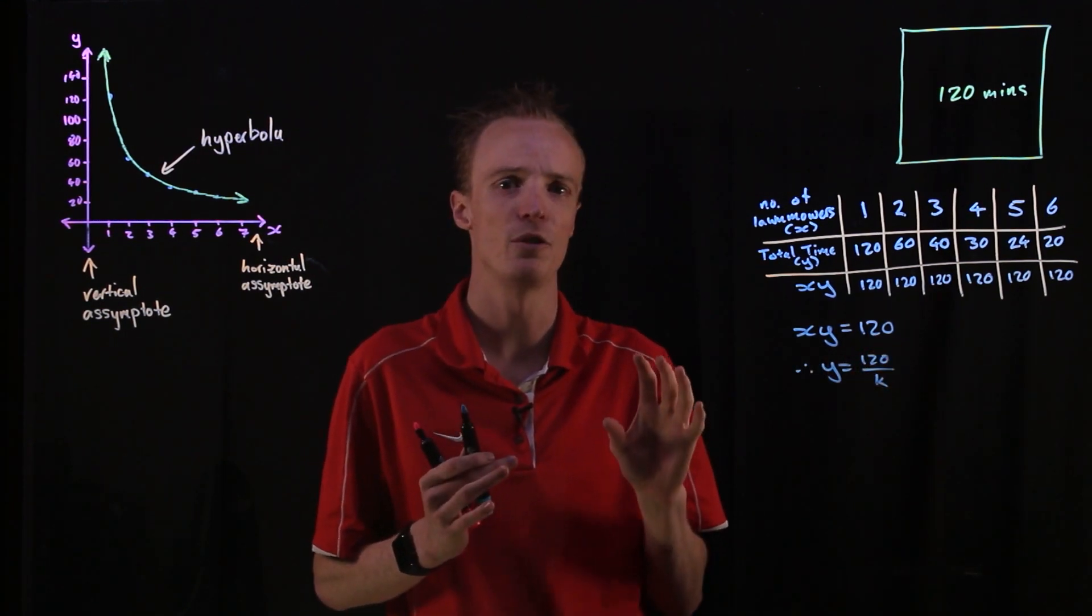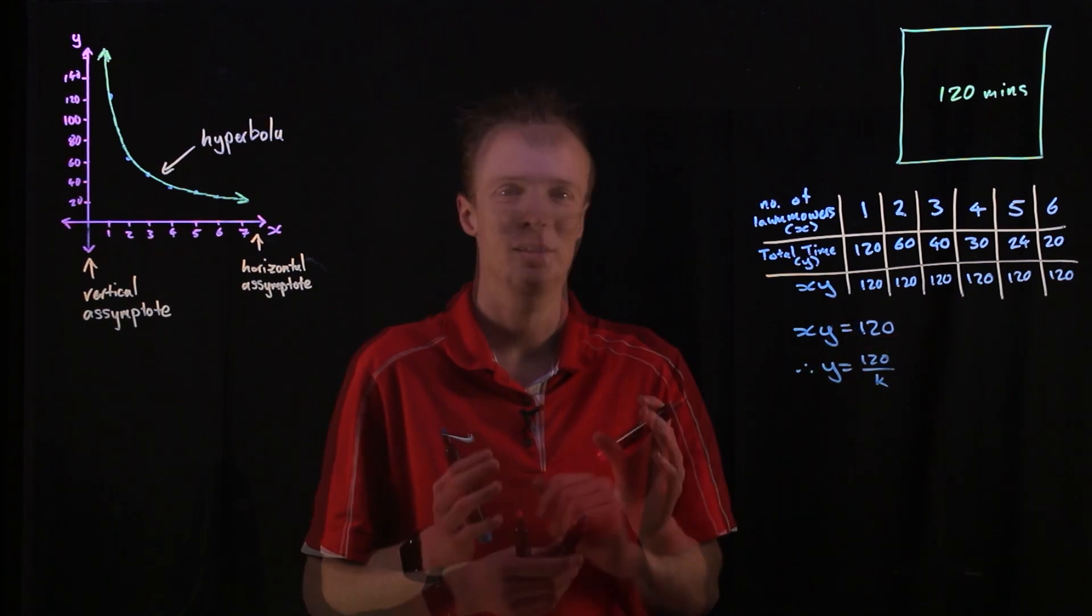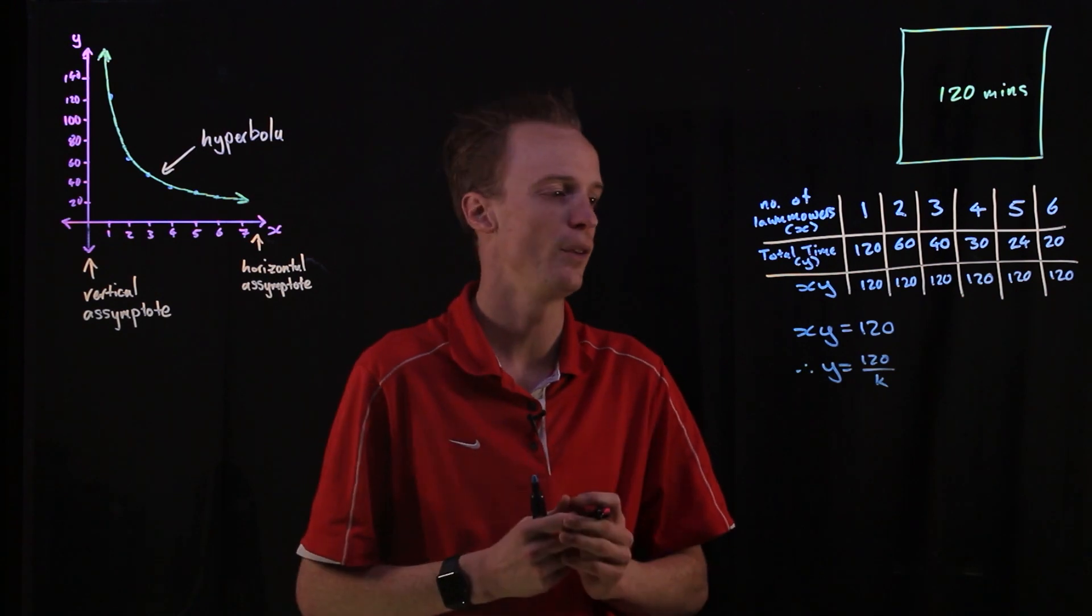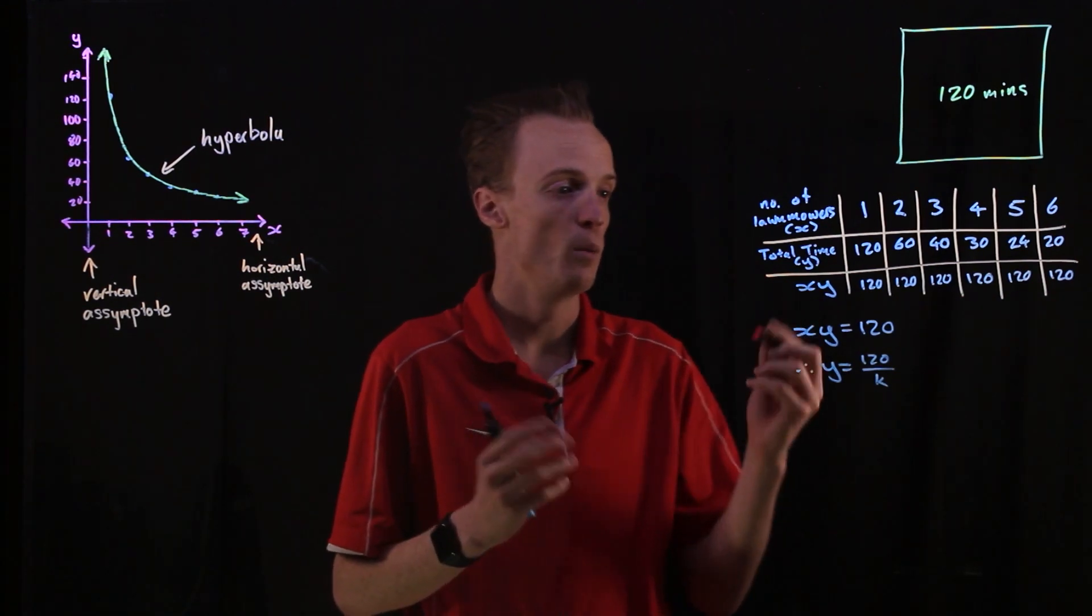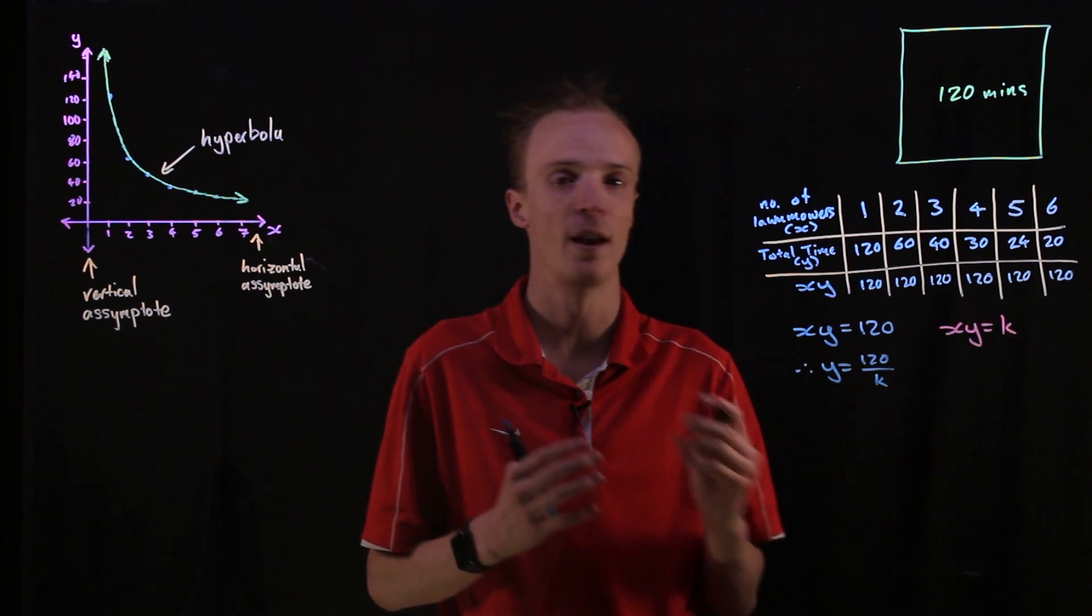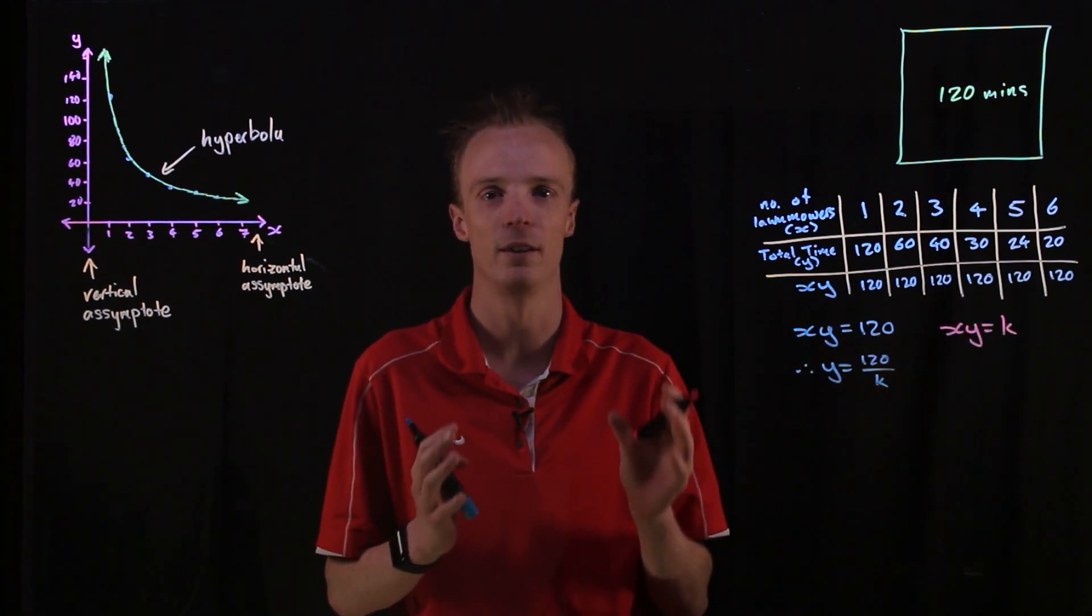It might not always be 120, but it should equal the same value. So more generally speaking, when two variables are inversely proportional to one another, when we multiply x and y together, they should equal the same value. We call this value k.